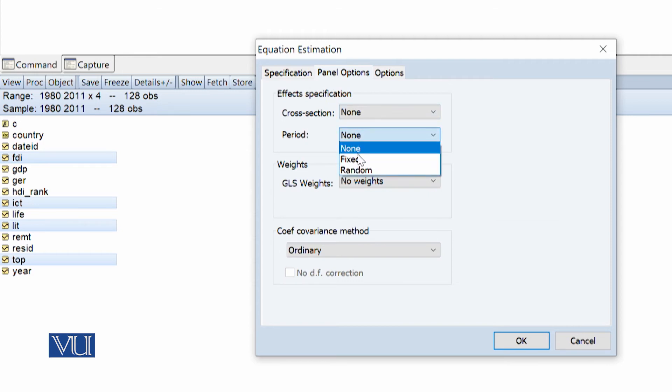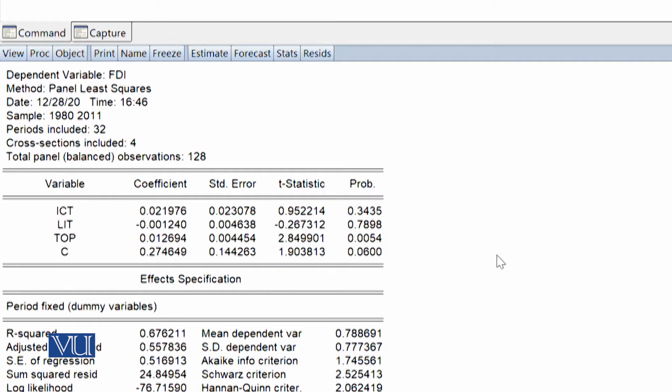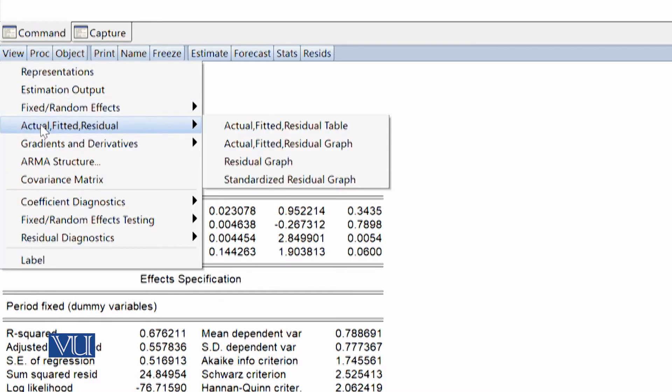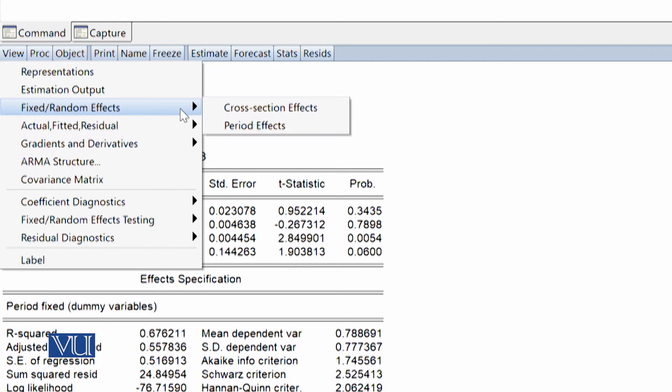By clicking on OK, you have the findings of panel least squares. By clicking on view, you can check the fixed and random effect. There is cross section effect and there is period effect. By clicking on the period effect, you have the effect of each year.